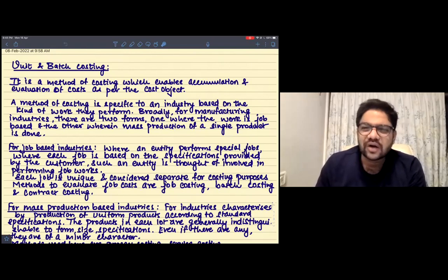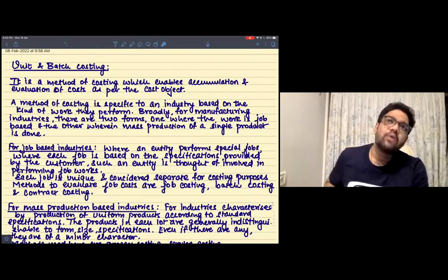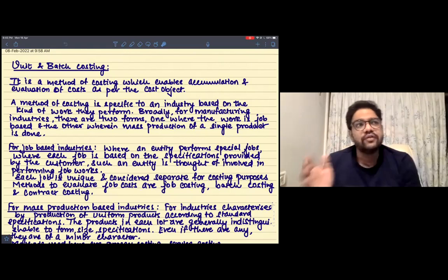Okay, for job-based industries you have two types: you can do job costing or batch costing. And for that matter, even contract costing is a job costing situation. Why? Because every contract is unique. So when you are into the execution of special jobs or if you are into the specification of customized jobs, then you do job costing.